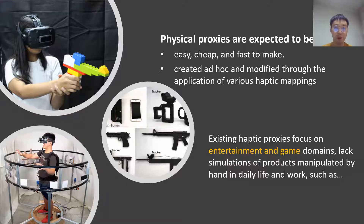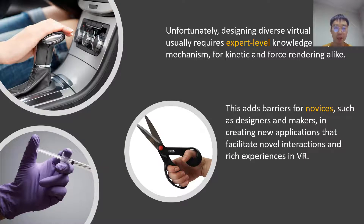However, existing haptic proxies focus on entertainment and game domains, like simulations of products manipulated by hand in daily life and work, such as the car gear, scissor, and the syringe. Unfortunately, designing diverse virtual hand tools usually requires expert-level knowledge of specific mechanisms for kinetic and force rendering alike. This adds barriers for novices, such as designers and makers, in creating new applications that facilitate novel interactions and rich experiences in VR.